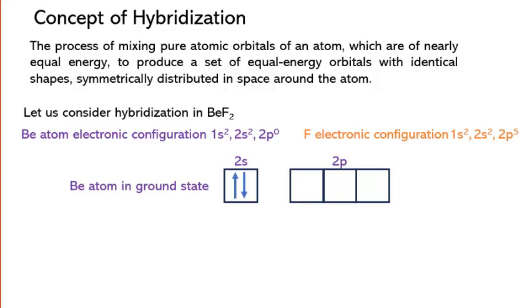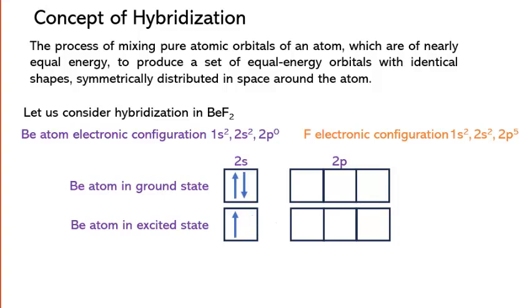However, during the bonding process, one of the electrons in the 2s orbital is promoted to the 2p orbital, resulting in the configuration 2s¹ 2p¹. This promotion creates two unpaired electrons, one in the 2s orbital and one in the 2p orbital, which can now form bonds with fluorine atoms.